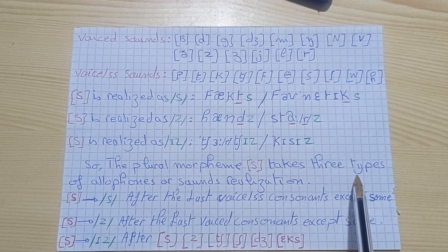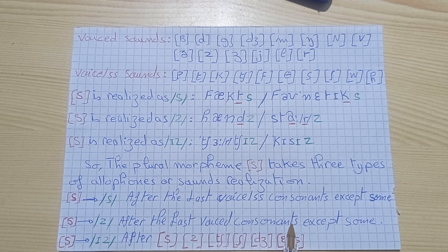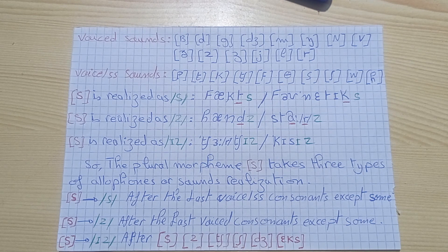The plural morpheme S takes three types of allophones or sound realizations. Three main realizations: S is realized as /s/ after the last voiceless consonant, except S, Z, CH, SH, J, and X. S is realized as /z/ after the last voiced consonant, except S, Z, SH, CH, J, and X. And S is realized as /ɪz/ after S, Z, CH, SH, J, and X.